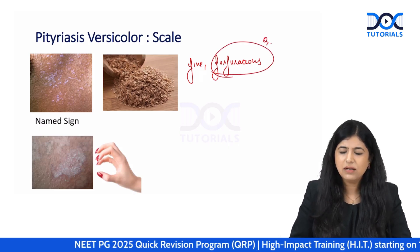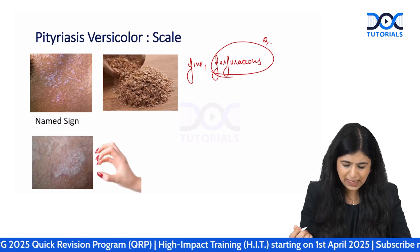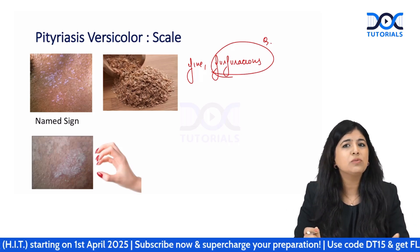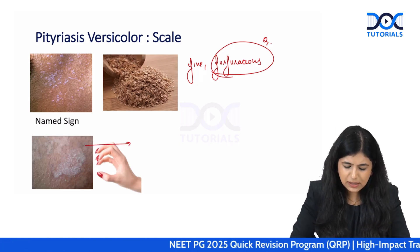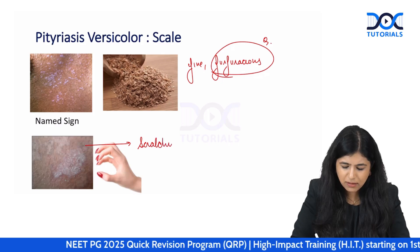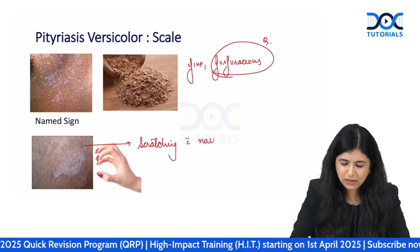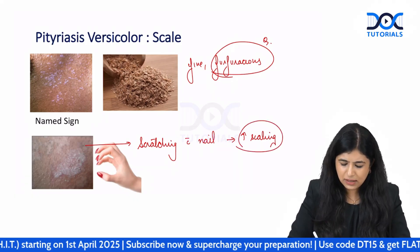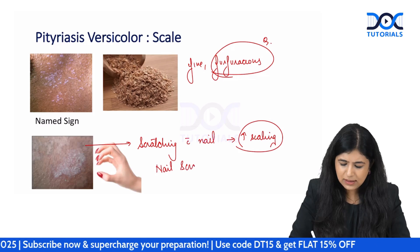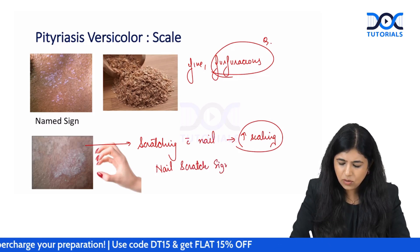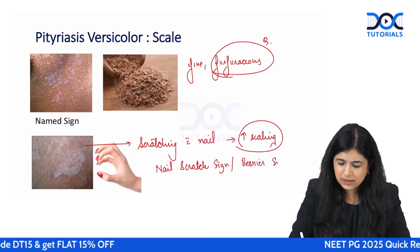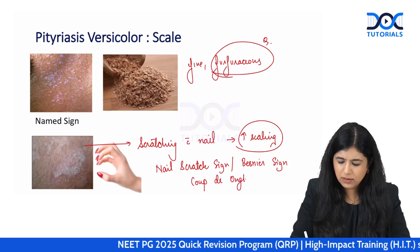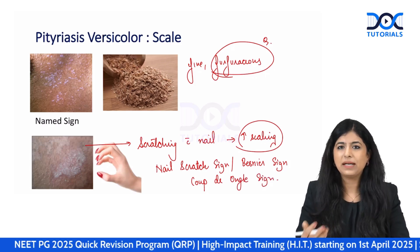In certain patients, due to sweat and moisture, you may not be able to see the scaling. Scratching the lesion with your nail can increase the scaling — this is called the nail scratch sign, also called Besnier's sign, also called the Coup de Ongle sign. This is simply an exaggeration of scaling by scratching.